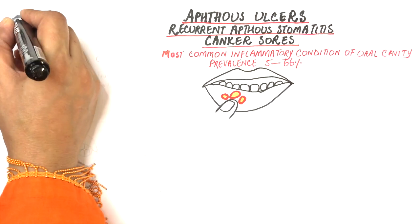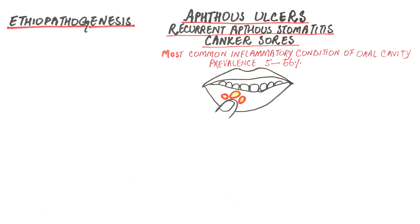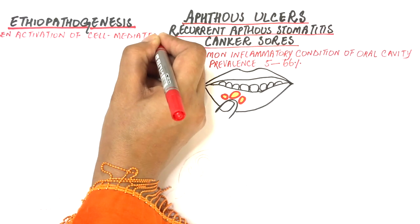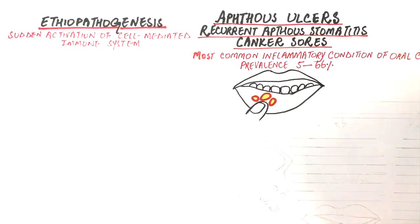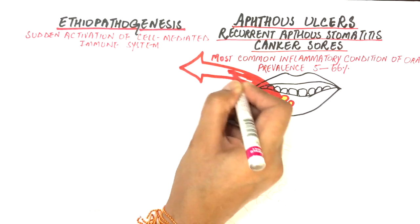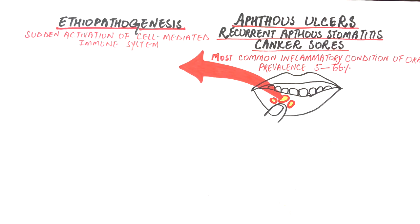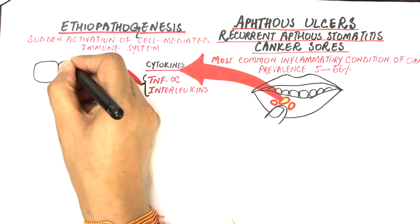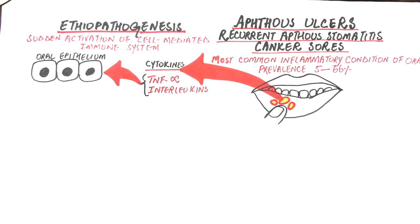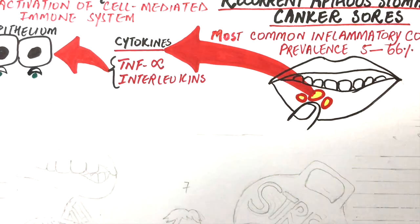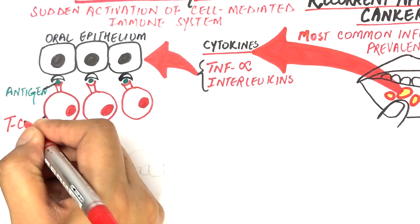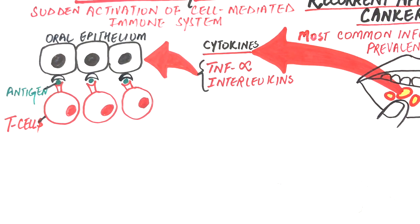The exact cause or etiopathogenesis for aphthous ulcers is unknown. However, it's thought that ulceration might result from a sudden activation of the cell-mediated immune system at the site of ulceration, leading to the liberation of cell signaling molecules or cytokines like TNF-alpha and some other interleukins. These cytokines cause antigen expression on oral epithelial cells, which are then recognized by T lymphocytes, triggering a cytotoxic response, and the epithelial cells are phagocytized by immune cells resulting in ulceration.